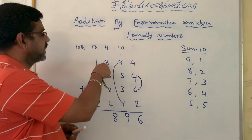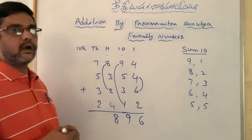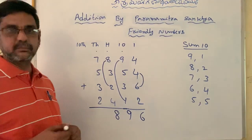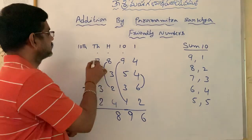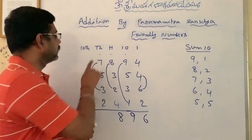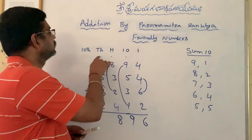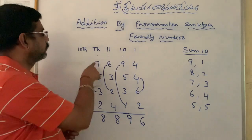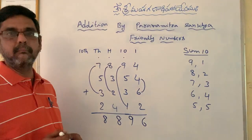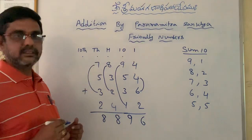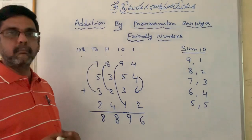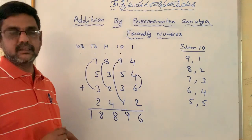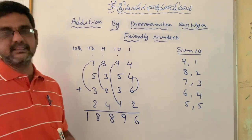Since 8 and 2 are friendly numbers in the hundreds place, we get 1 dot — place that dot at the thousands place. In the thousands place column, 7 and 3 are friendly numbers. Leave those and add remaining numbers including the dot: 1 plus 5 equals 6, 6 plus 2 equals 8. The dot goes to the ten-thousands place, giving us 1. So the final answer is 18896. By using friendly numbers, addition becomes very easy.